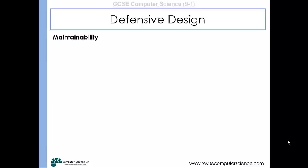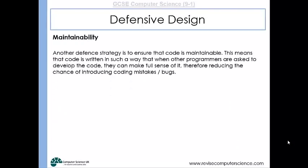Maintainability is another defensive design strategy. On the face of it, you may not think that this is really helping make your program defensive — because what maintainability is talking about is things like making sure that your code is written with nice spaces, indentation and so on. But if you think about it, if you write your program so that it is easy to make sense of, very clear and very concise, then it will reduce the chance of other coders introducing coding mistakes or bugs into your program if you were to share your code with someone else so that they could develop it further.